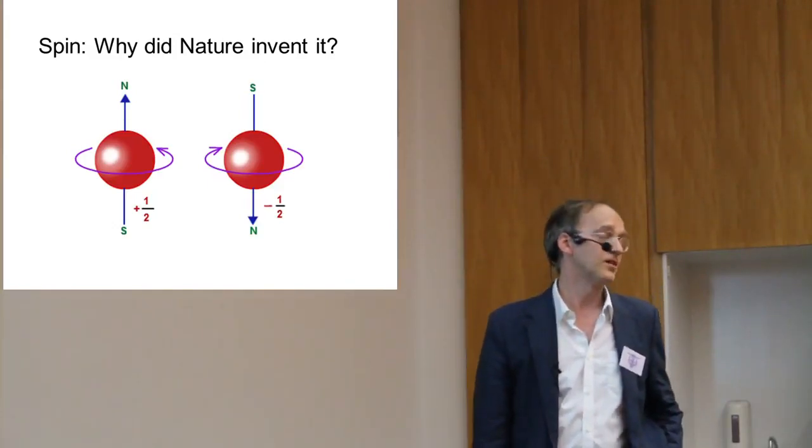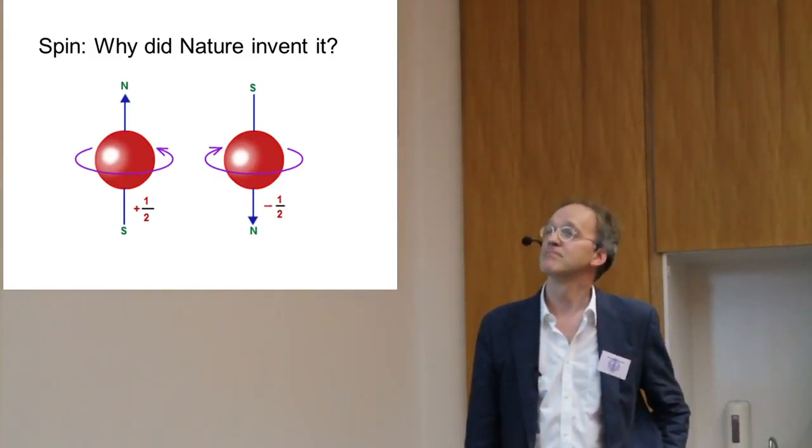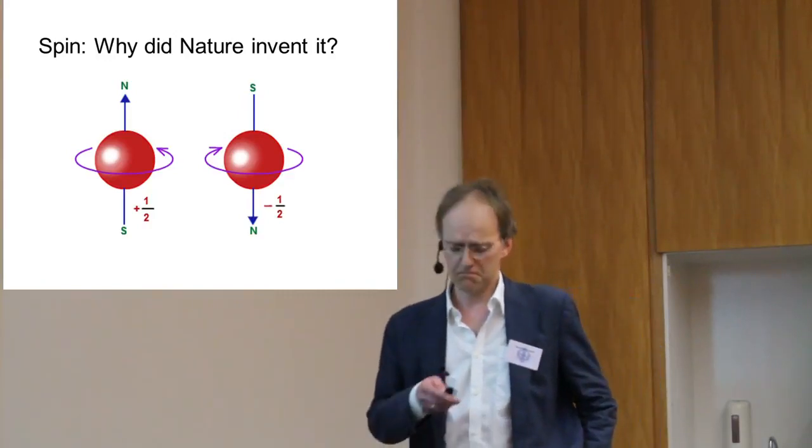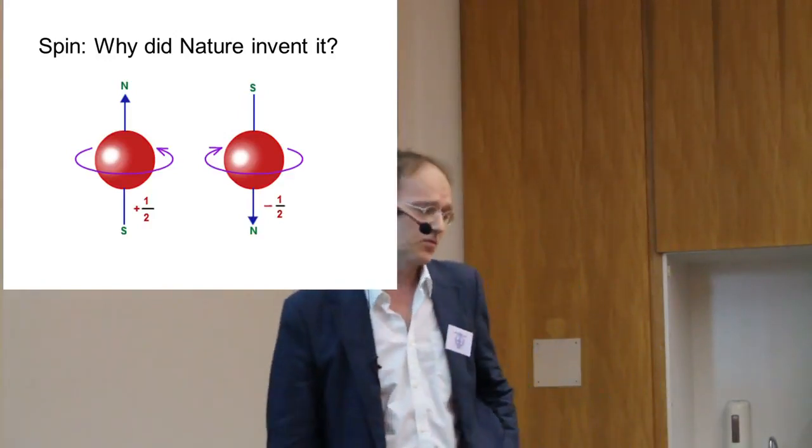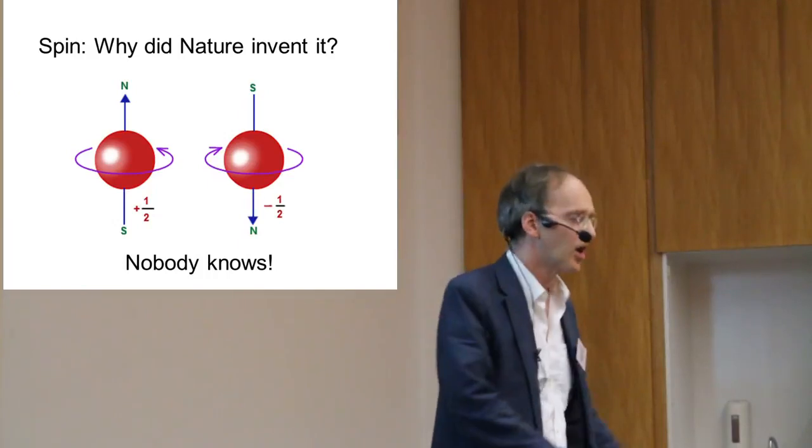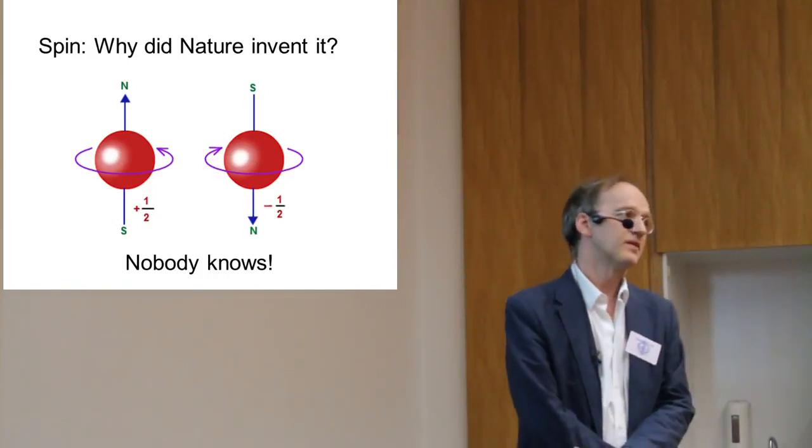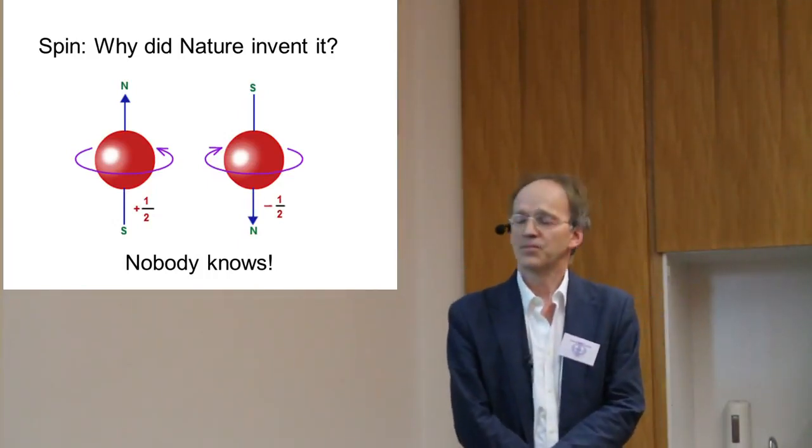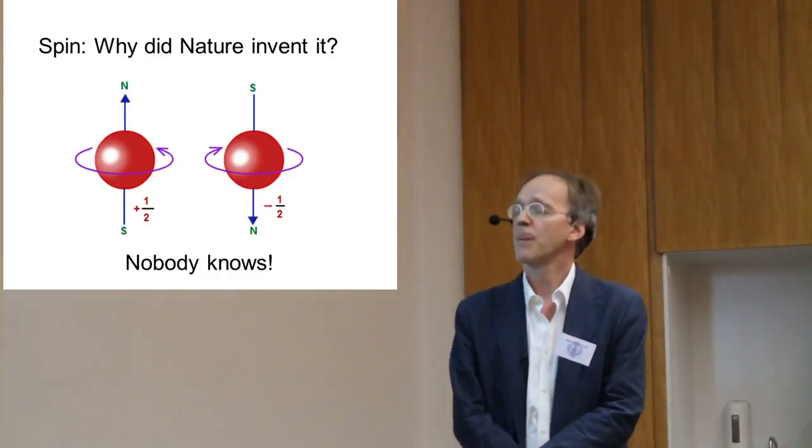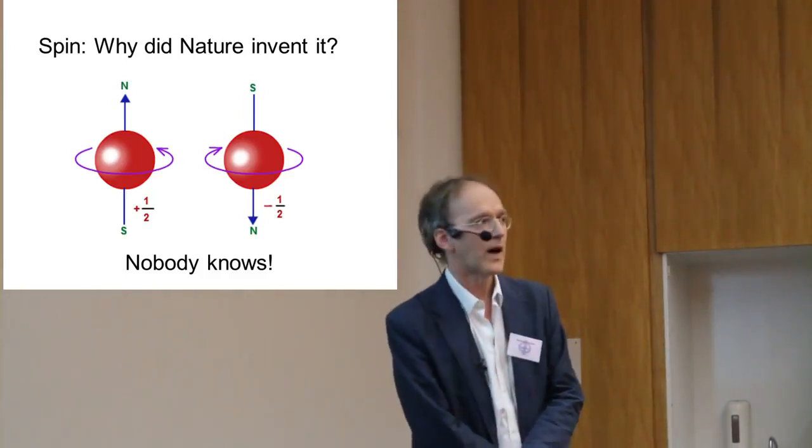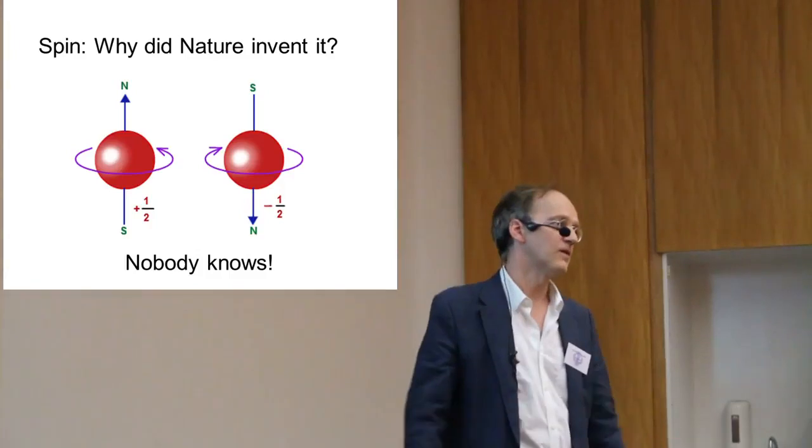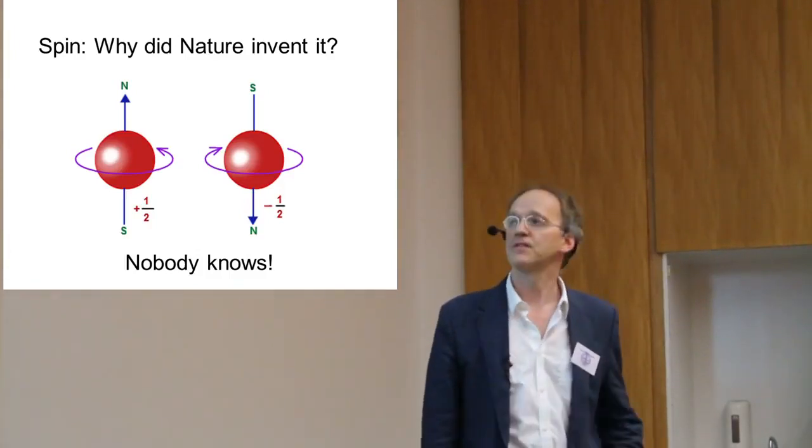Why did nature invent spin after all? And the answer is nobody knows. We're not talking about describing the Dirac equation. The question is why nature did not allow to do physics without that feature.